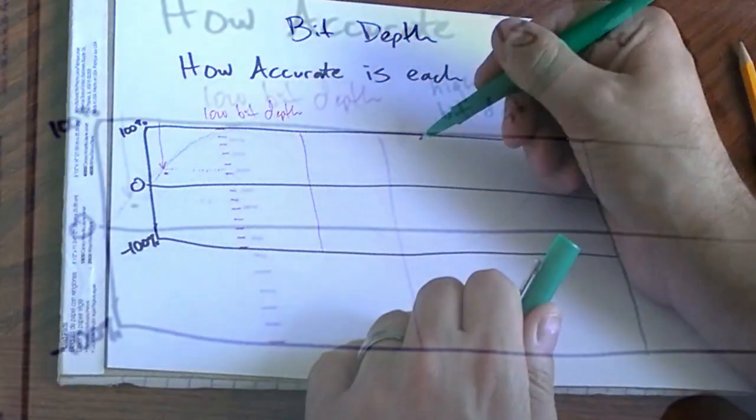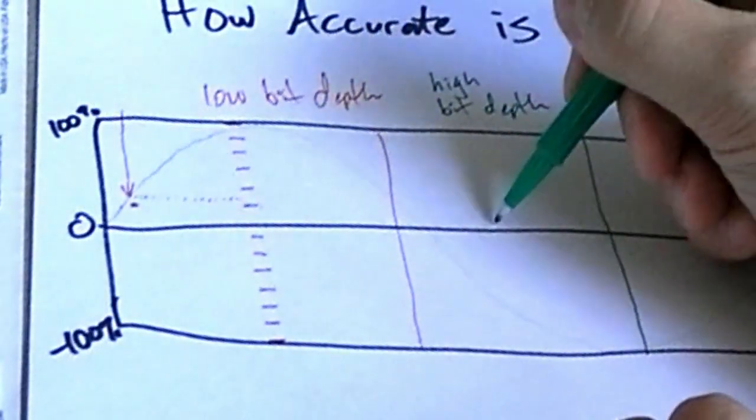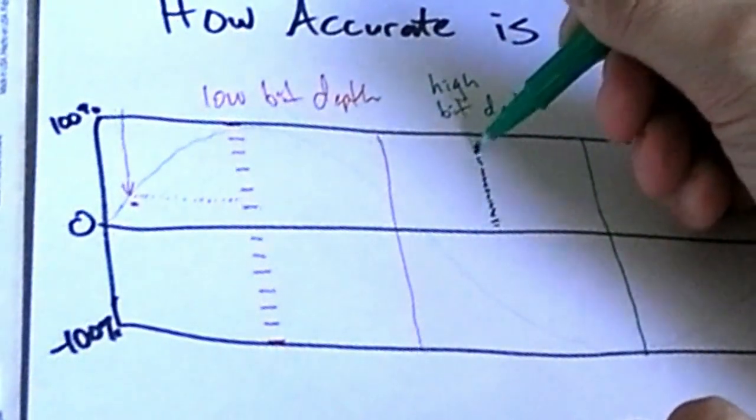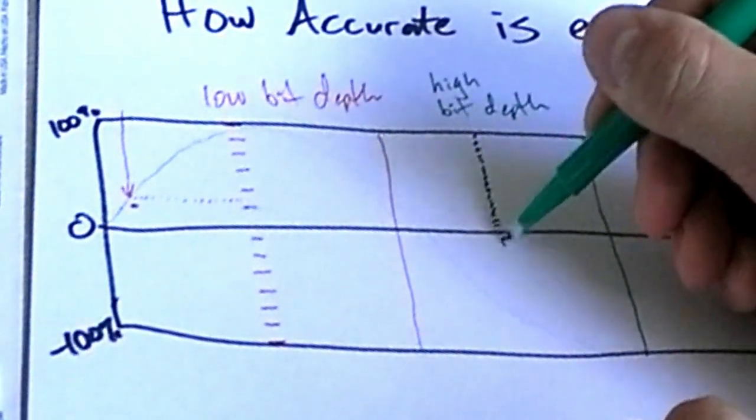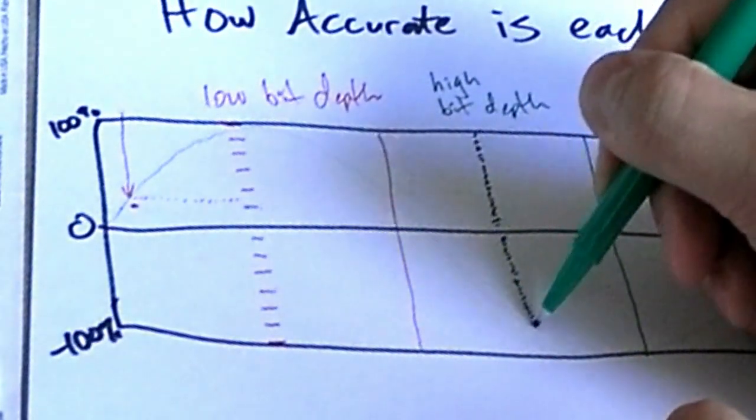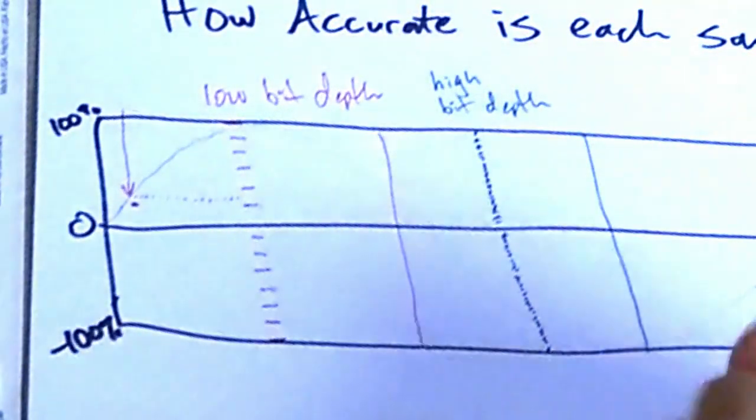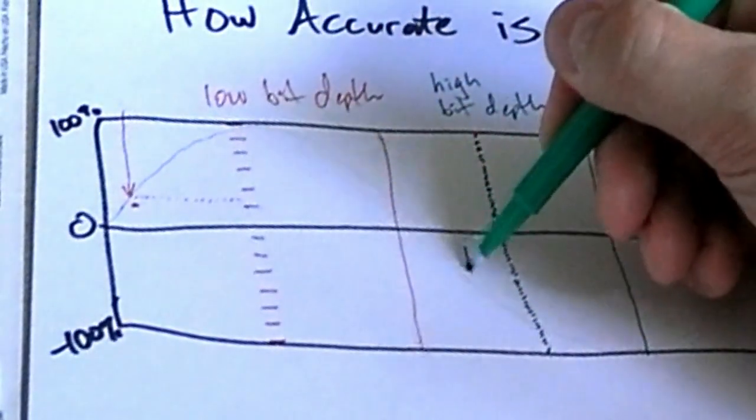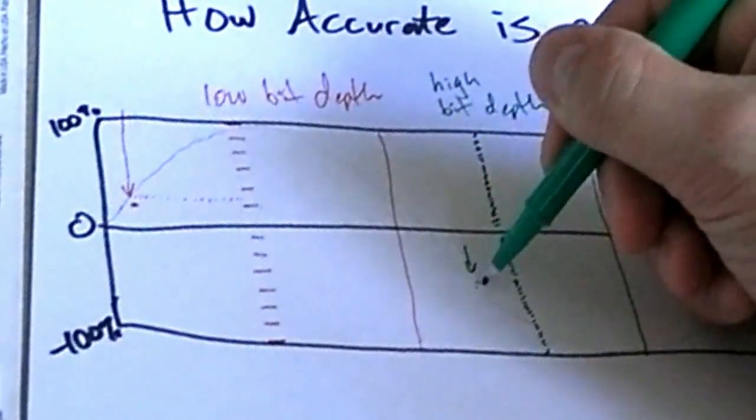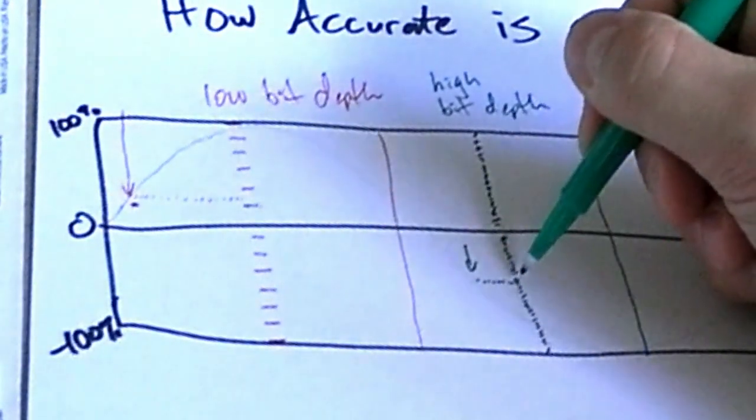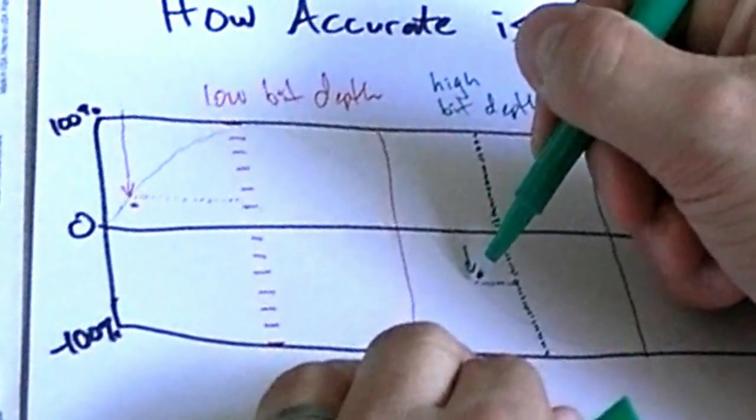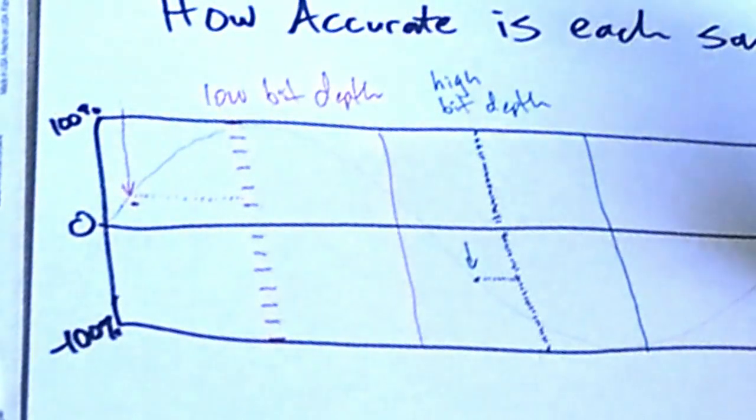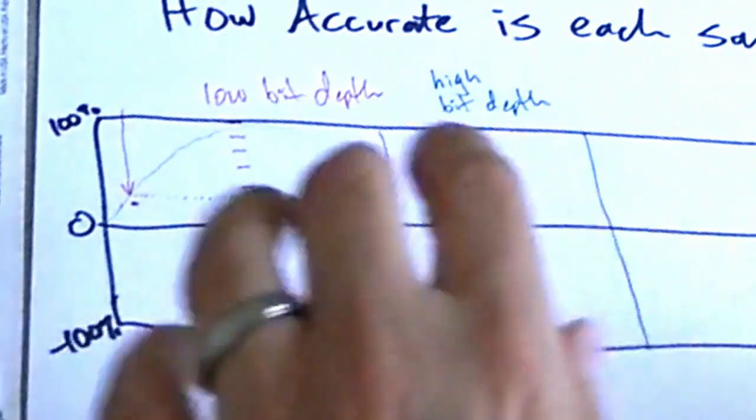With a higher bit depth, you've got many more gradations per sample, up and down. So the error is much less. And again, if we wanted to take a sample, let's say right here, there's one of these gradations that's extremely close to it. So it ends up being very close to the original wave and thus more accurate and less noisy.